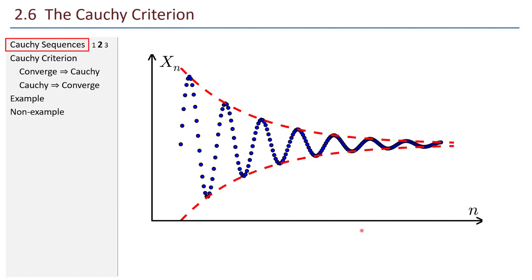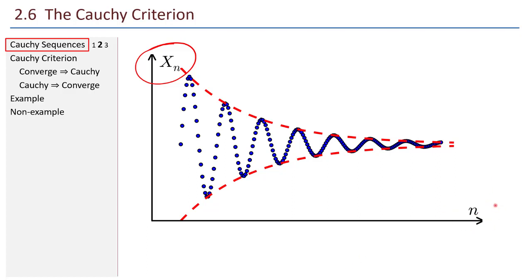Here's a picture — it's a little different from my usual one, so you may have to tilt your head. My x-axis is vertical, and the horizontal axis gives us the term number. As I move down the sequence, the terms look like they're getting closer and closer to each other. After maybe the 50th term, all the terms in the tail of the sequence are within 1 tenth of each other.